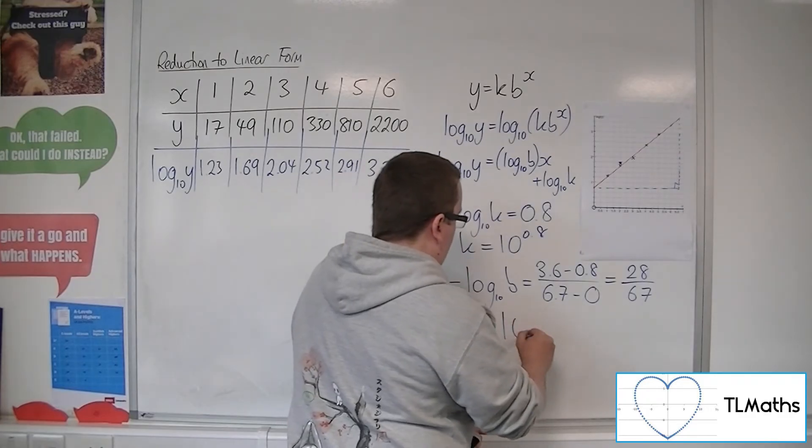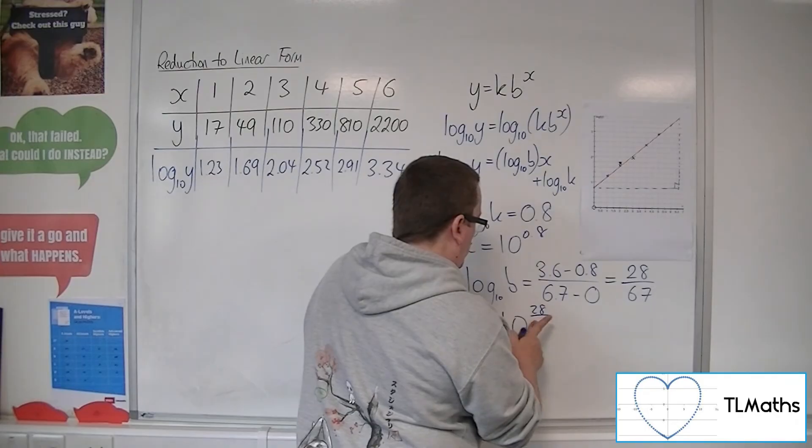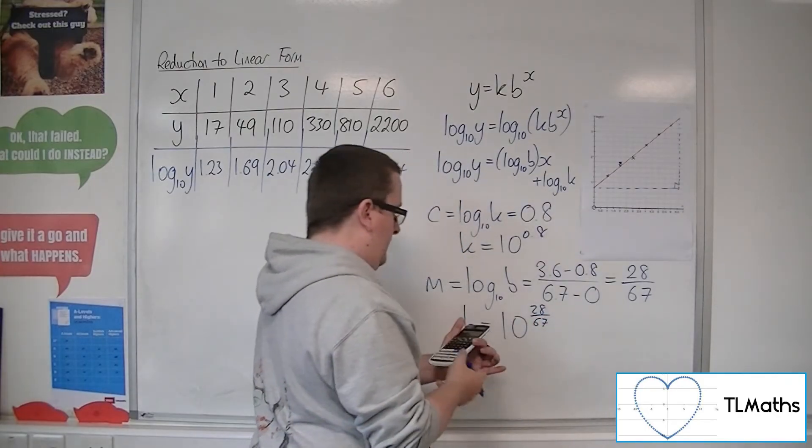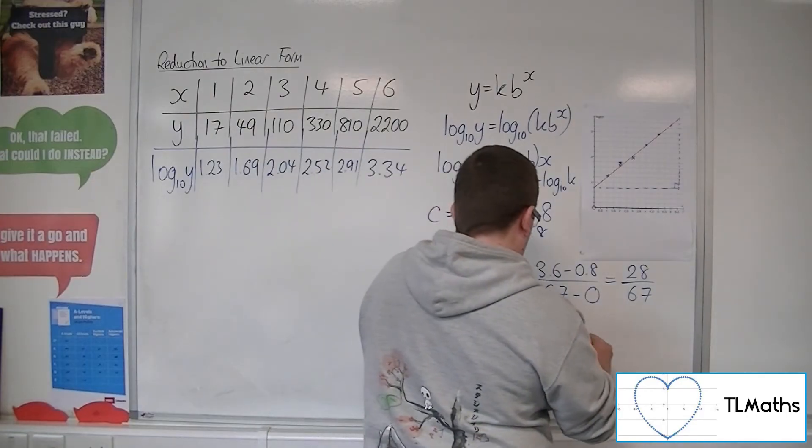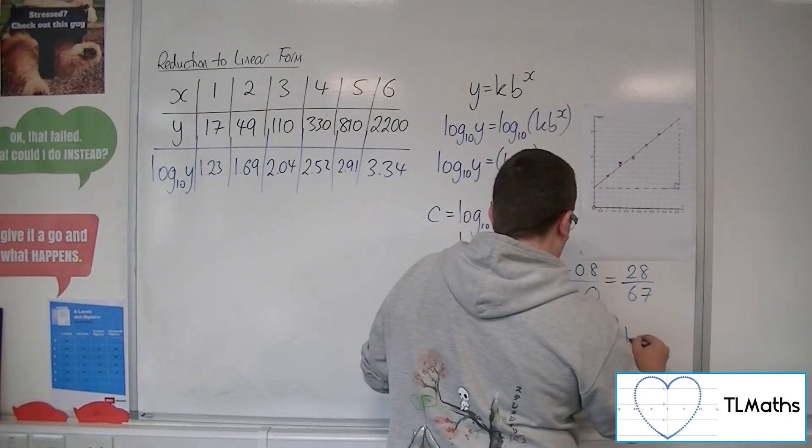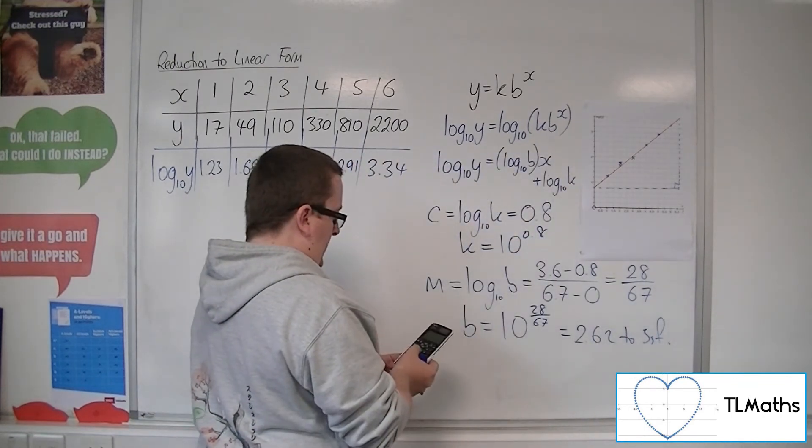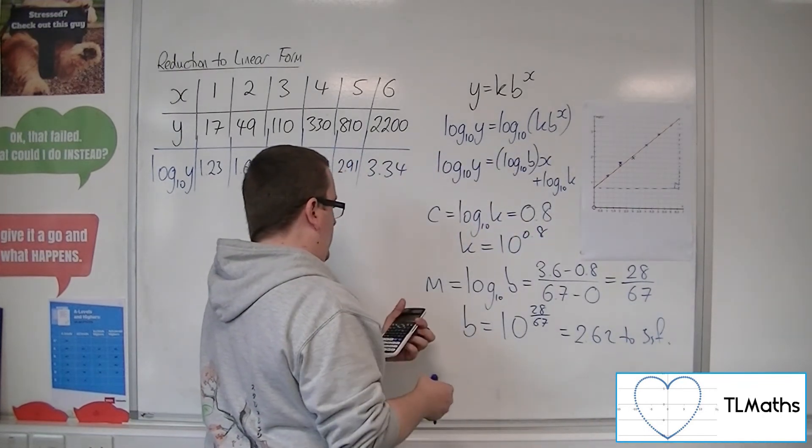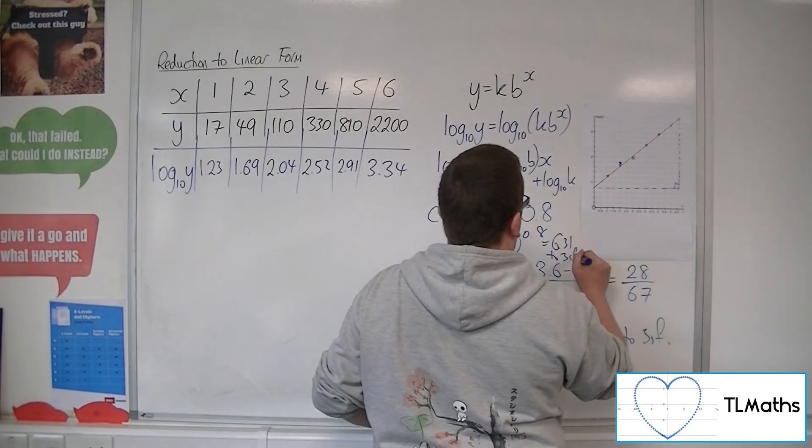So that's about 2.62, and the 10 to the 0.8 is 6.31 to 3 sig fig.